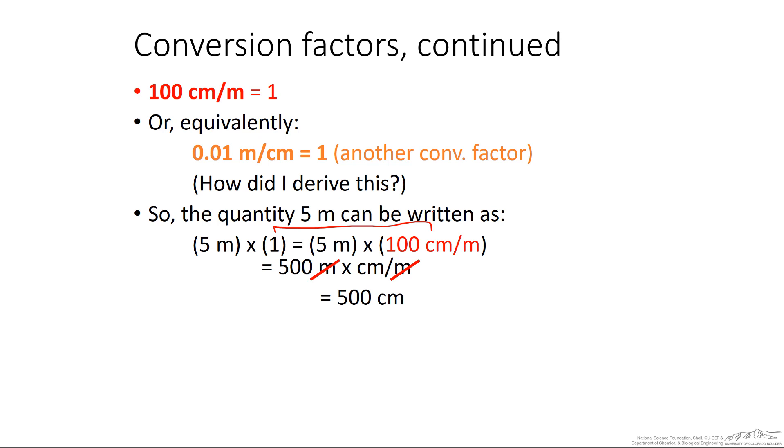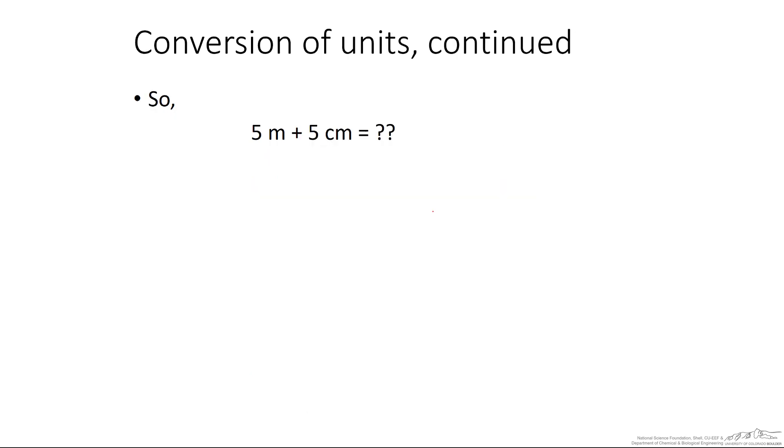A lot of you already knew that, but this is sort of how you can show it mathematically. Alternatively, we can use that other conversion factor, the 0.01 meters per centimeter, to convert 5 centimeters to meters. And we end up with 5 centimeters is equal to 0.05 meters. So regardless, 5 meters plus 5 centimeters is equal to 505 centimeters. Or 5 meters plus 0.05 meters is equal to 5.05 meters.